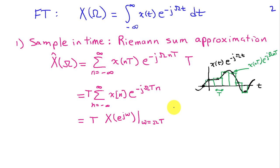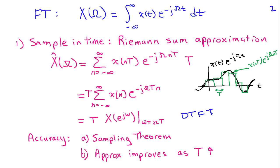Carrying this sum further, we see it can also be written as T times the sum from n equals minus infinity of x of n, e to the minus j omega T n — which is just T times the discrete-time Fourier transform. We can ask what is the impact of this approximation. From the sampling theorem, we have to sample x of t at at least twice the highest frequency component, so the signal will be relatively smooth with respect to our sampling interval. Therefore, approximating the integral using this Riemann sum should do a pretty decent job.